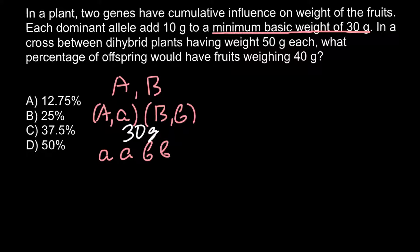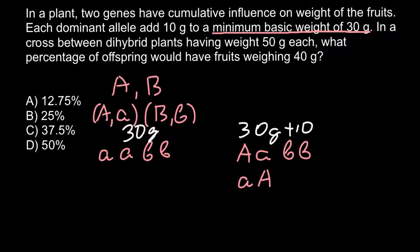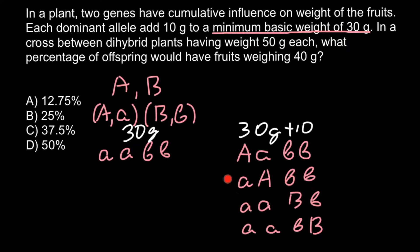The next category would be 30 grams plus 10 grams, which is the 40-gram category. What genotypes can we list here? The first genotype has one dominant allele A with the rest recessive: capital A, small a, small b, small b. Another is small a, capital A, small b, small b. Another can be small a, small a, small b, capital B. All these different genotypes would make one phenotype, which we call 40-gram fruits.